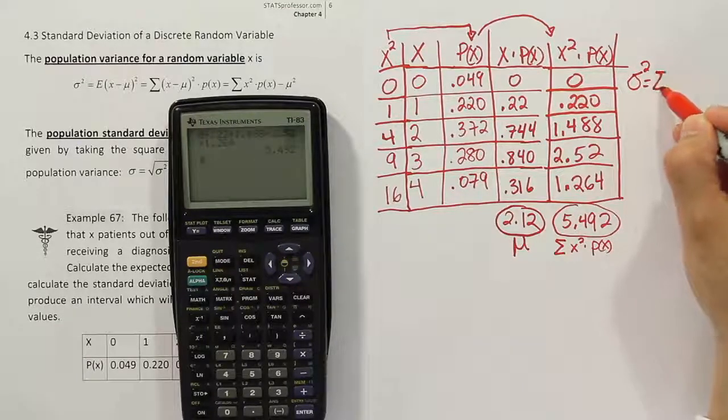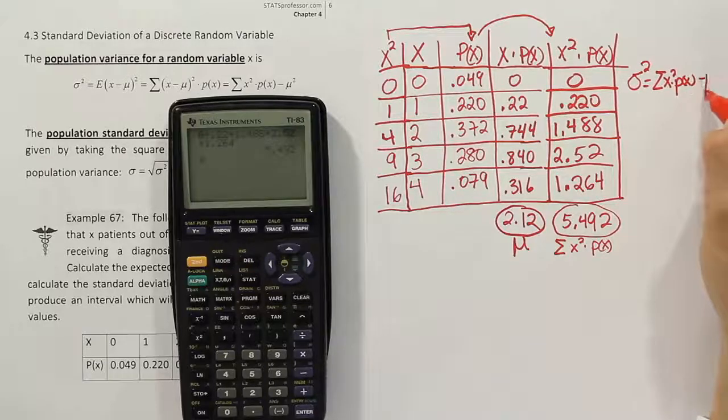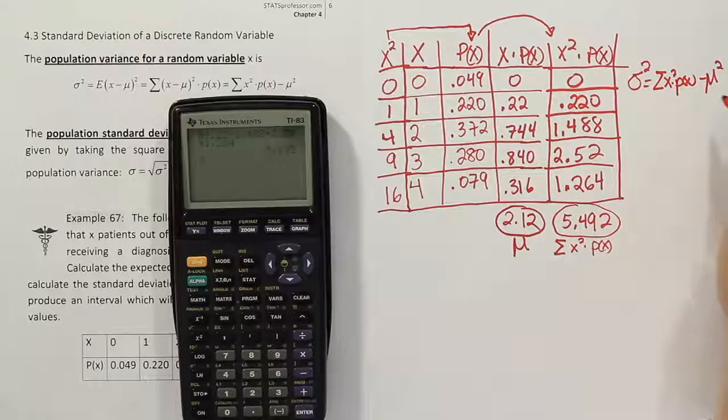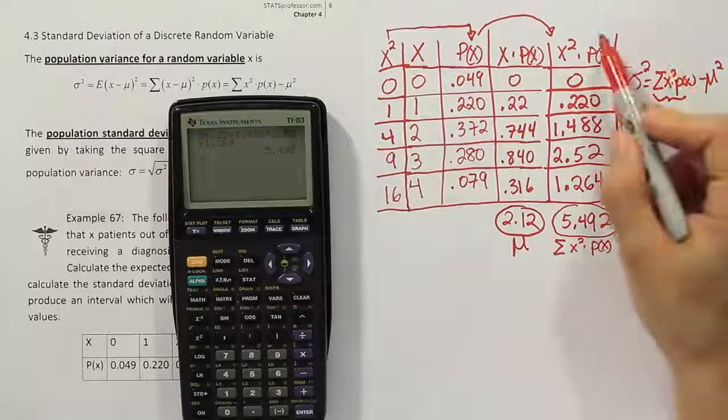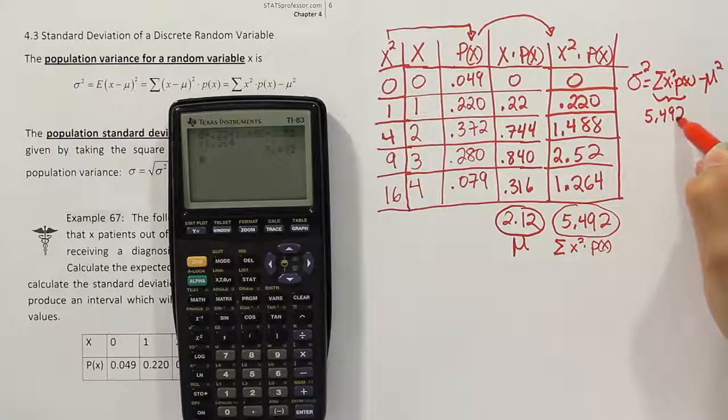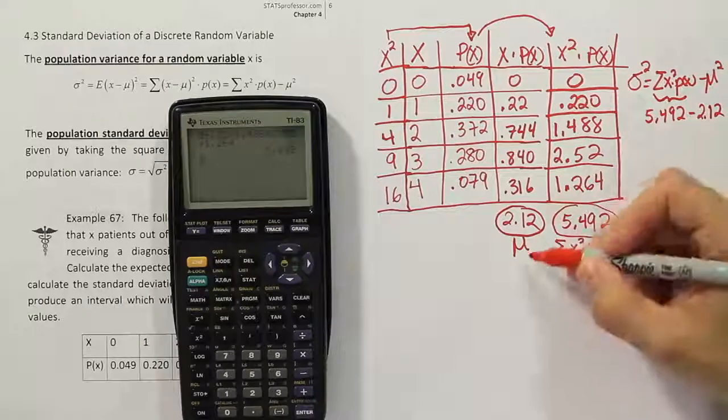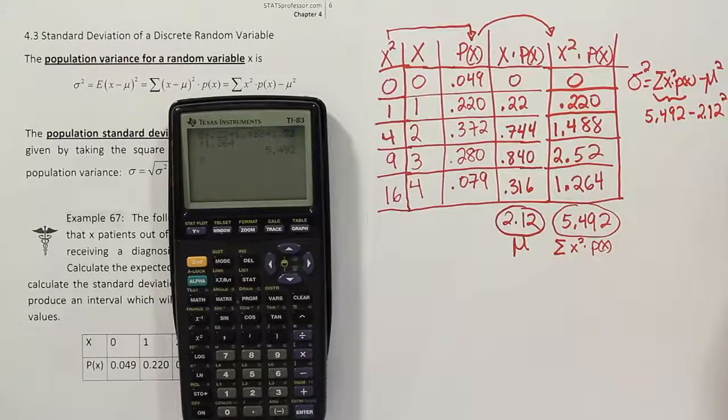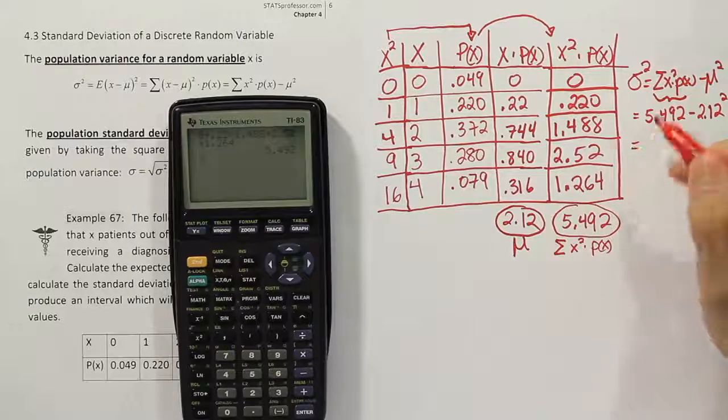The formula, actually I'll do it over here so we have some space to work. We're going to say sigma squared is equal to the summation of X squared times P of X minus the mean squared. So we're going to plug in these numbers. This quantity here, this summation of this column is just the 5.492. So 5.492 minus the 2.12, because that's our mean, right? Squared.